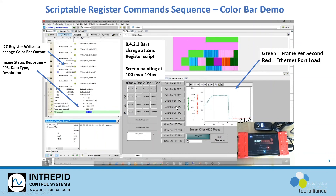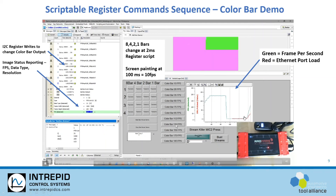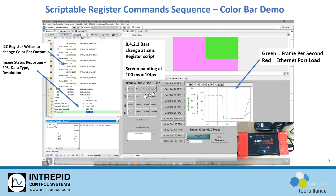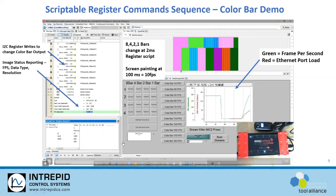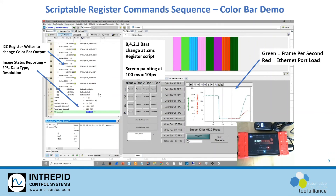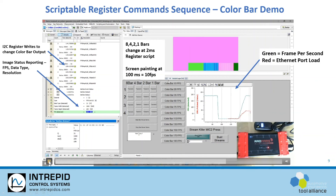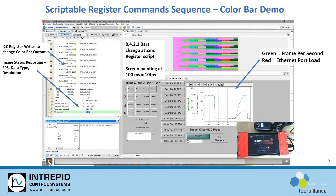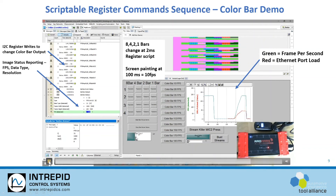Over here we're reporting the frames per second and the ethernet port load — 130, 150 — now we start seeing some changes, because the bars are not being painted long enough when the frames per second keeps changing. Now we jump back to 10 and we can see those individual frames again getting mashed in the middle of trying to change it, so we can slow this back down.